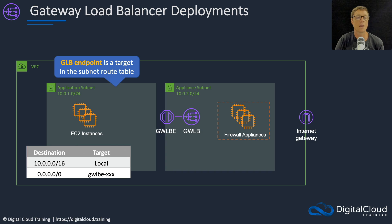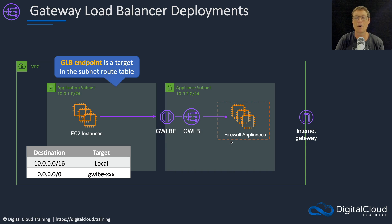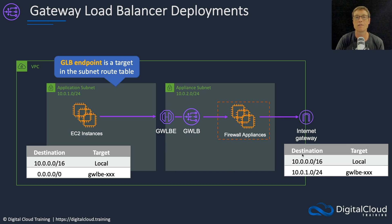Let's have a look at the routing. We have a destination with a local target for the VPC CIDR block itself. Then for all other traffic — anything going out to the internet, for example — we want to route to the gateway load balancer endpoint address, which would be the ID of the gateway load balancer endpoint. So our connections will now go to the gateway load balancer endpoint, through the gateway load balancer, and then get routed to the backend instances which are running our firewalls. From there, they can go out to the internet.